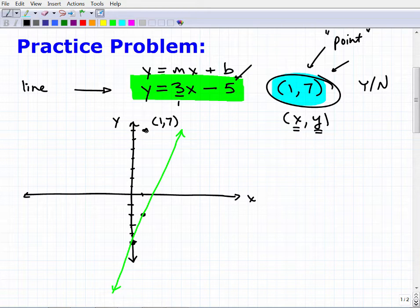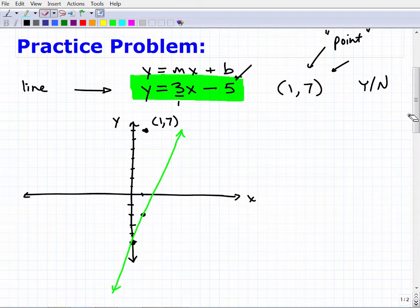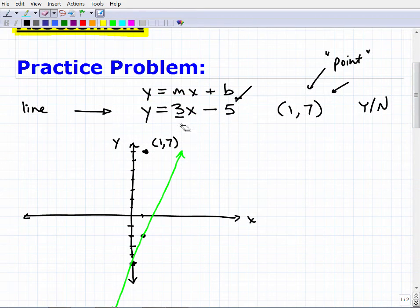So assuming I'm working with a pretty accurate graph paper or whatnot, we can kind of answer the question visually, right? So is the point (1, 7) on the line y equals 3x minus 5? Well, clearly not, right? This point is not on this line. So the answer is no, but now let's answer this question algebraically.